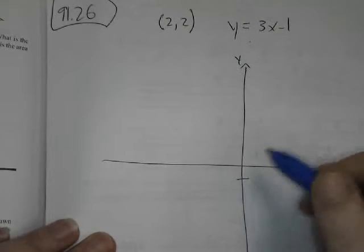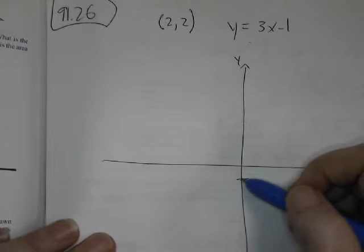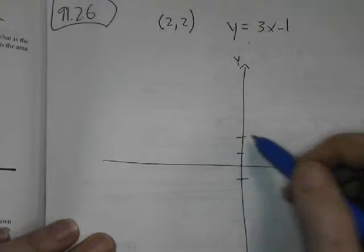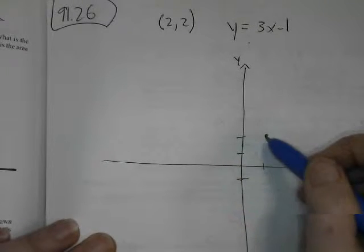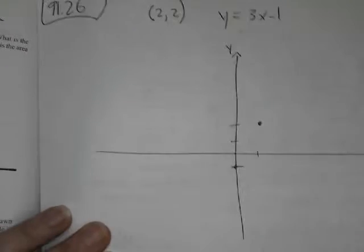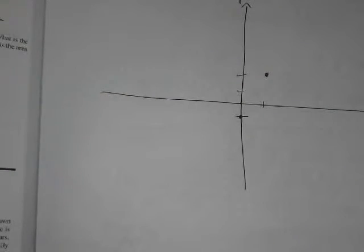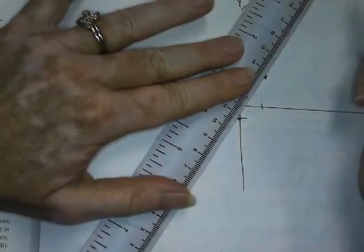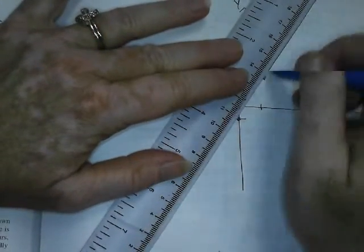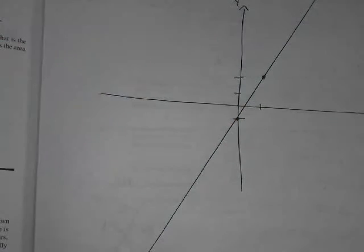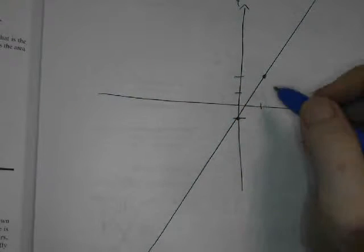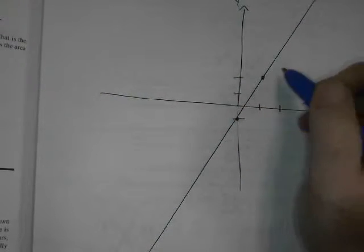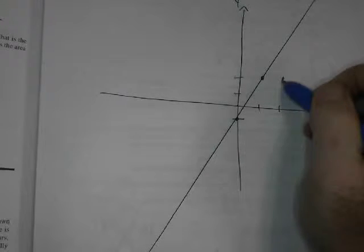So the line is negative 1, and it goes up 3 over 1, up 1, 2, over 1. I have my slap bracelet right here. I can at least make a straight line if I want to. There's a line, and then 2, 2, 1, 2, 2.